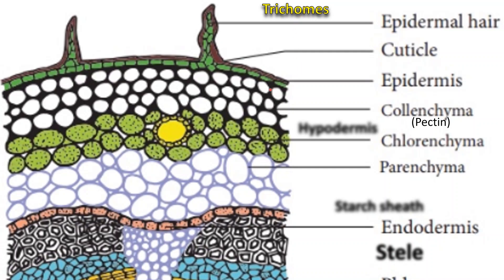The layer between the epidermis and pericycle is called cortex. The cells which are compactly arranged and whose intercellular spaces are filled with pectin — this is called hypodermis. It gives mechanical support to the plant body.